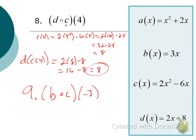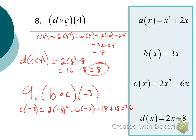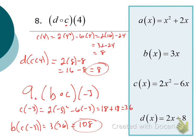Number 9: B of C of negative 3. Give that a shot. Did you evaluate the C function at negative 3 first? Plugging negative 3 in for X: 2 times negative 3 squared minus 6 times negative 3. Negative 3 squared is 9, times 2 is 18. Negative 6 times negative 3 is positive 18. So C of negative 3 equals 36. Now put 36 into the B function: 3 times 36 equals 108. So B of C of negative 3 equals 108.